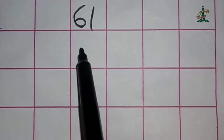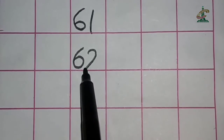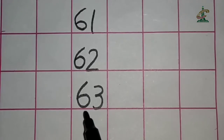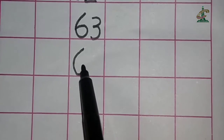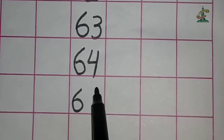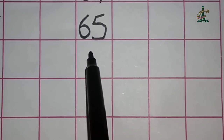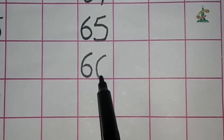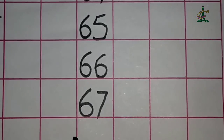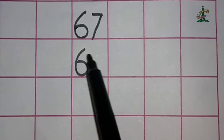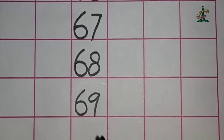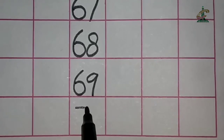6, 1 — 61. 6, 2 — 62. 6, 3 — 63. 6, 4 — 64. 6, 5 — 65. 6, 6 — 66. 6, 7 — 67. 6, 8 — 68. 6, 9 — 69. 7, 0 — 70.